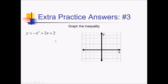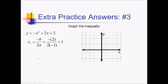To graph this inequality, let's start by getting the vertex of this parabola. So that's negative b over 2a to get the x-value. That's negative 2 over 2 times the a-value negative 1. Negative 2 over negative 2 gives us 1. Plugging that back into the original will give us the y-value of the vertex. So we have negative 1 plus 2 is positive 1, and 1 plus another 2 gives us 3. So that's a vertex of 1 comma 3.